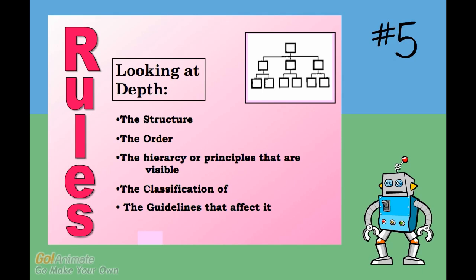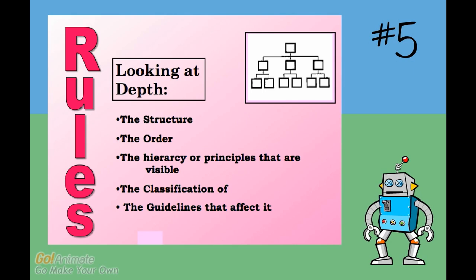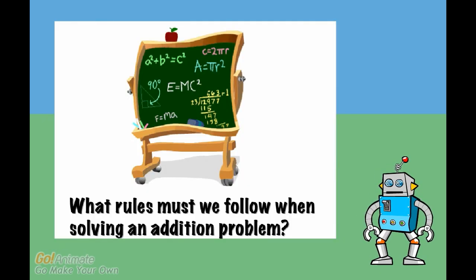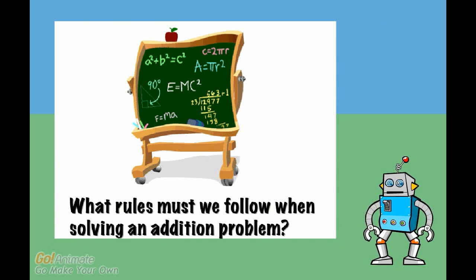The fifth icon shows a picture of what we call a tree map. It stands for the rules we must follow, or how something is classified. For example, when you are solving an addition problem, what are the rules you must follow? Ask yourself what rules apply to your topic.